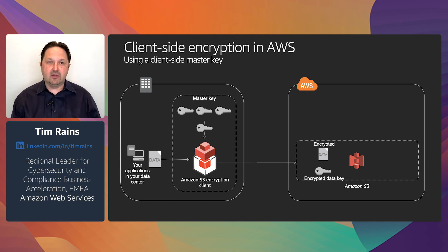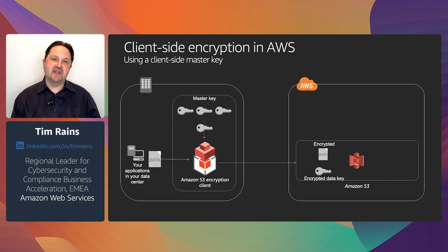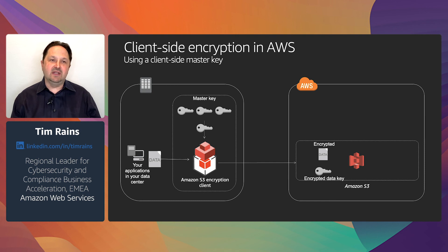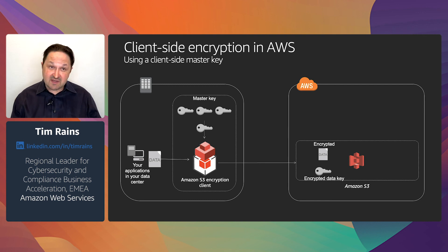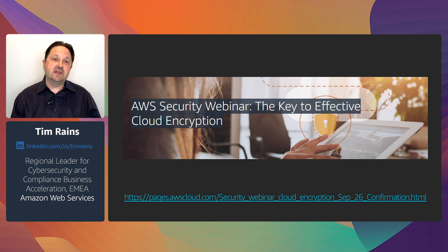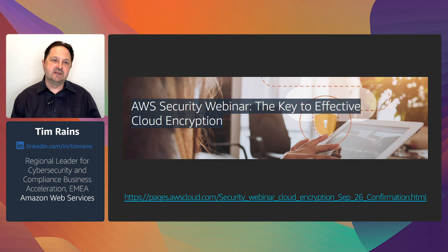To decrypt the data, the process is reversed. The encrypted data and encrypted data key are downloaded from Amazon S3 to the application running in the on-premises data center. The application finds the correct master key in the on-premises key management infrastructure and decrypts the data key, then uses the data key to decrypt the data. If you're interested in learning more about client-side encryption and other encryption and key management options, please check out the webinar that I recorded.